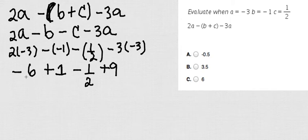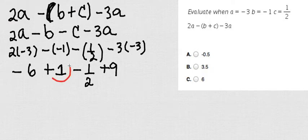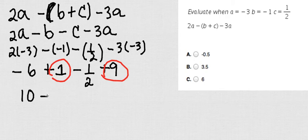Awesome, I'm almost done. Negative 6 plus 1 plus 9. Well, the first thing that I want to do is just to mix the positives first. So 1 plus 9 is going to be equals to 10, okay? And then I have 10 minus 6 minus 1 half.